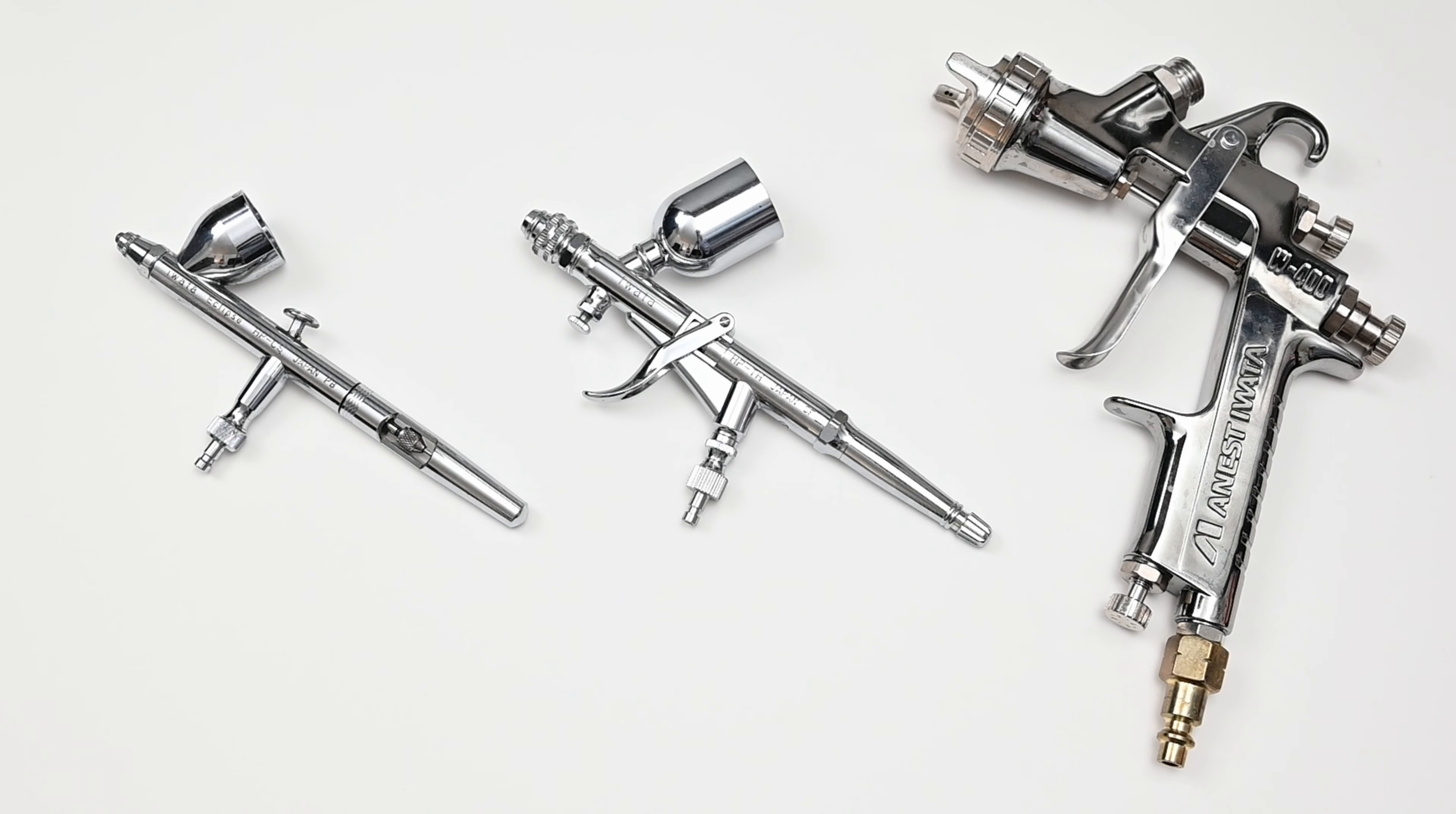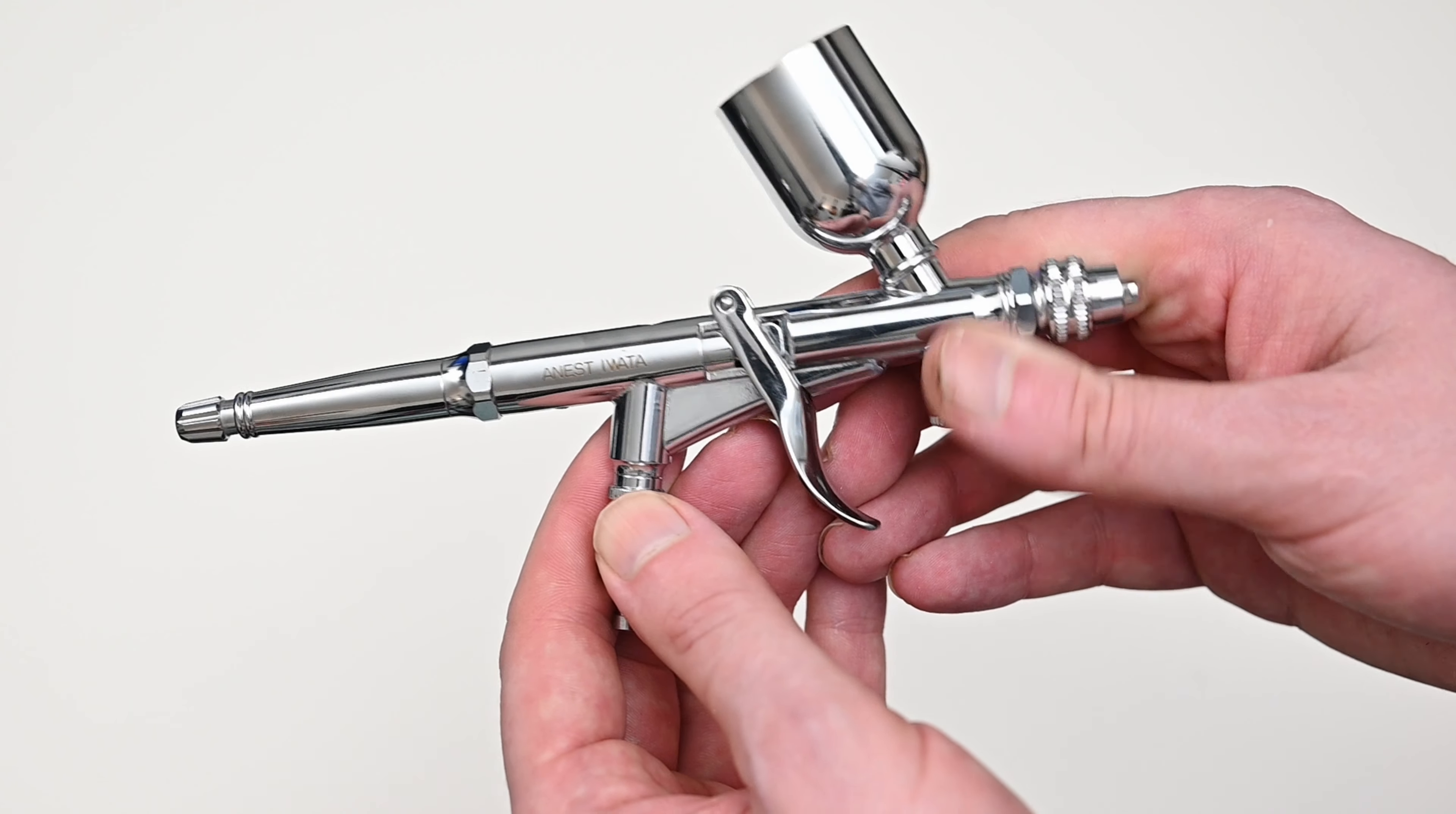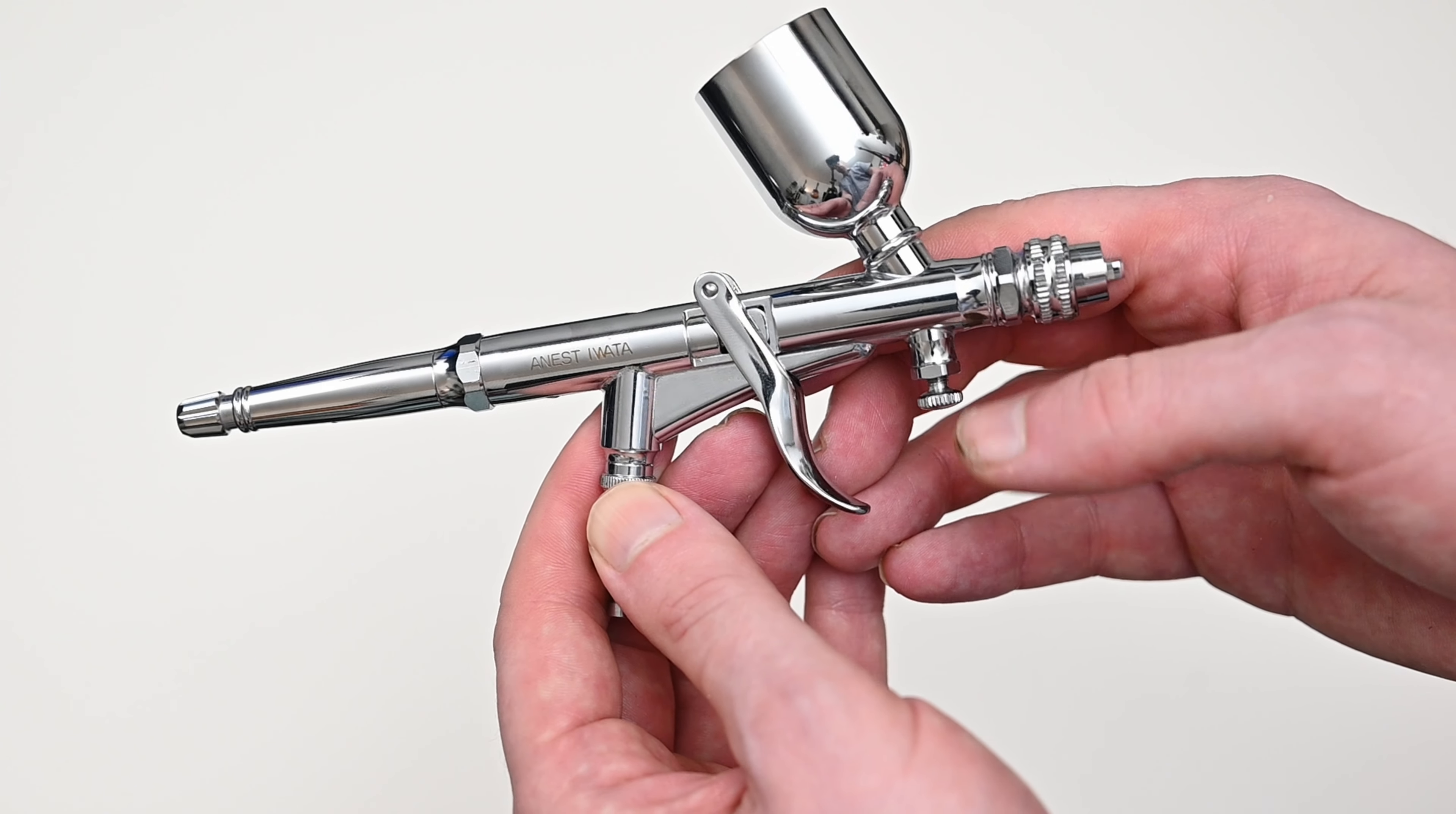If you don't have a conventional spray gun like an LVLP or an HVLP and you want to spray on these thicker paints in larger volumes the HPTH is definitely a great airbrush to look at. It doesn't require as much air as a spray gun so you don't need a large compressor. A normal one will work just fine.